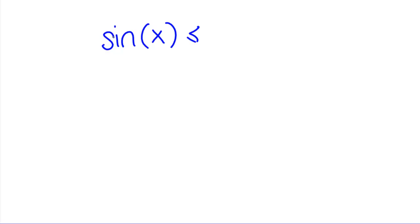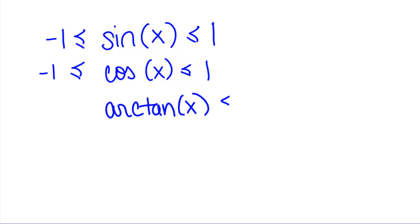So we know sine is trapped between 1 and negative 1, so we can always replace it with 1 and negative 1 and get bigger and smaller functions. The same thing is true for cosine. And another big one that you might not think of is arctangent, is trapped between pi over 2 and negative pi over 2. So those are the big things you want to look for. That doesn't mean there can't be other functions that you're interested in, but make sure you keep these in mind when you're working with the squeeze theorem.